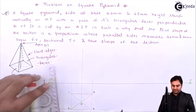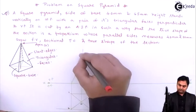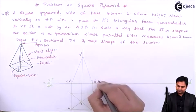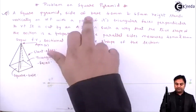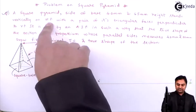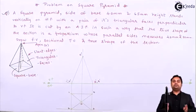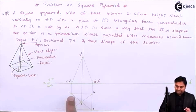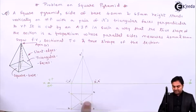The height is 65 mm. In the front view we have 1 dash, 2 dash, 3 dash, 4 dash. The square pyramid has a base of 40 mm and height 65 mm, standing vertically on HP with a pair of triangular faces perpendicular to VP. Two triangular faces — faces 1, 2 and 3, 4 — are perpendicular to VP, whereas triangular faces 1, 4 and 2, 3 are parallel to VP.